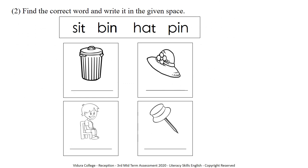Your second question is: Find the correct word and write it in the given space. We have given four words and four pictures for you. You have to select the correct word and write it under the correct picture. The first picture is a bee. Find the word 'bee' from the given words and write it under the first picture.